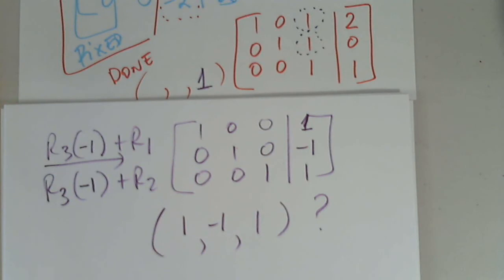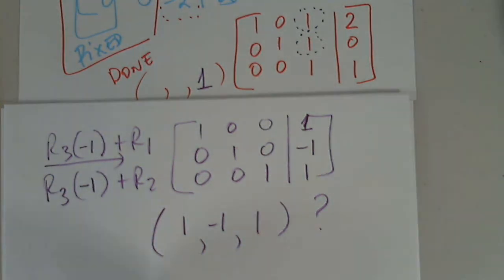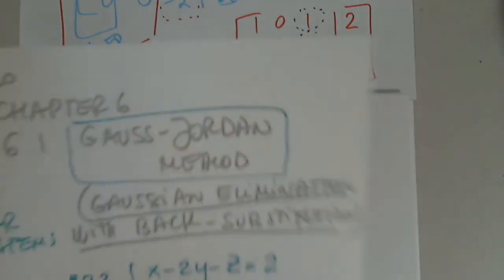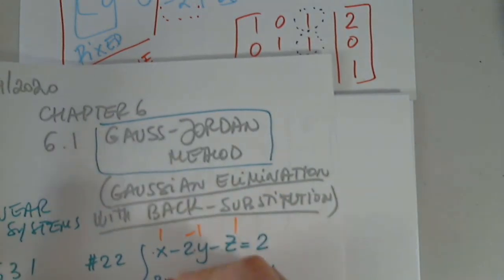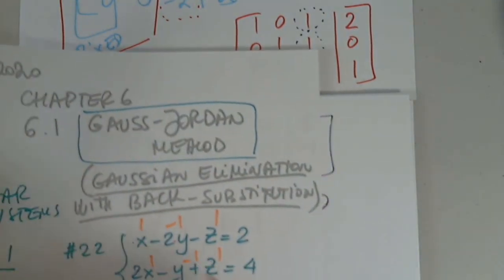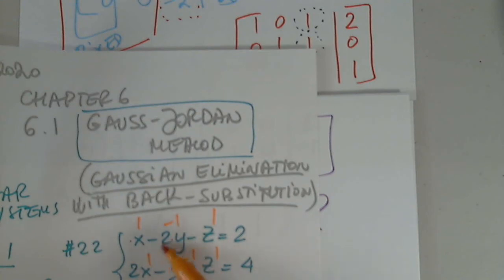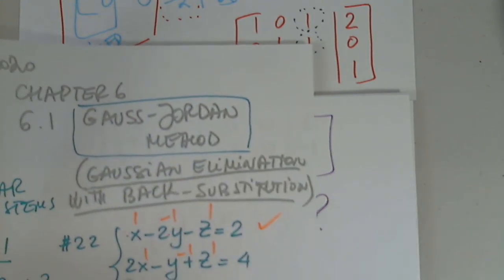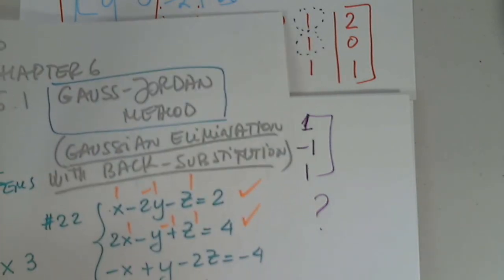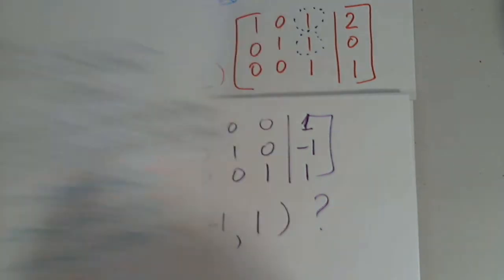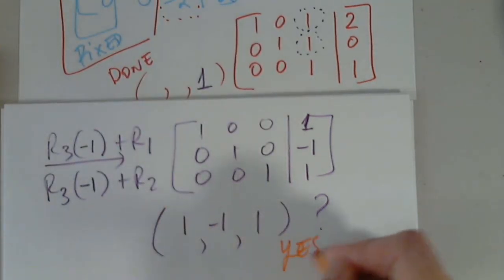Do I know that for sure? No. Do I trust it? No. I have to go back — ten pages ago — and plug in one, negative one, one. One plus two is three, three minus one is two, two plus one is three, plus one is four. Negative one minus one, negative one minus one, negative two minus two, negative four. I'll say yes — I checked. And this is it.